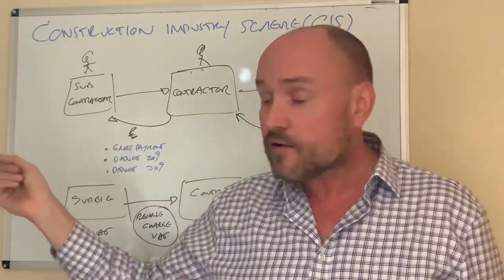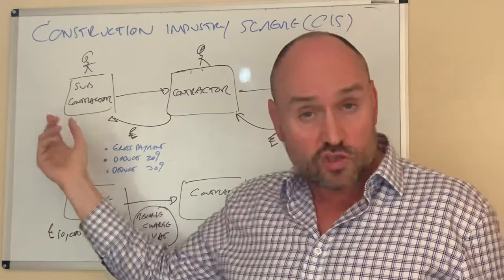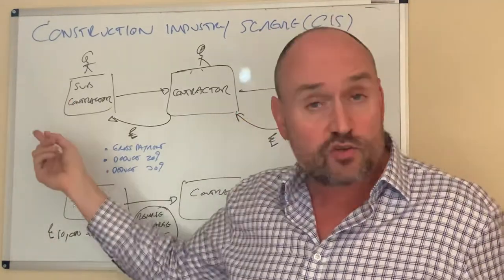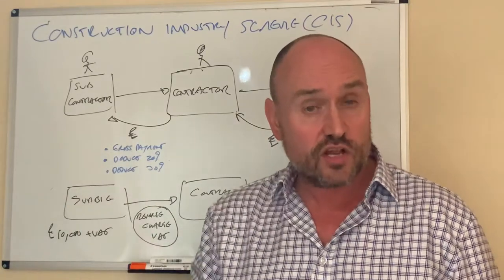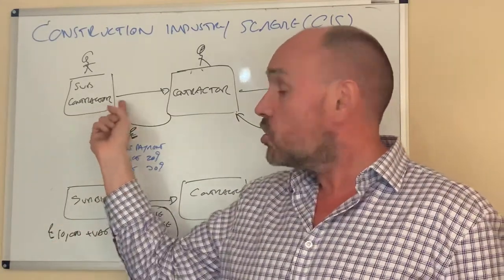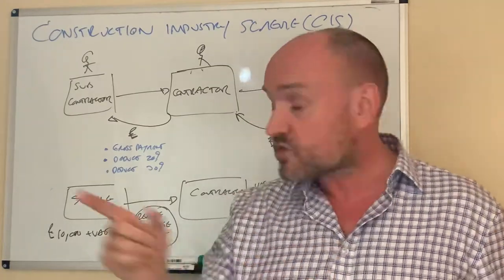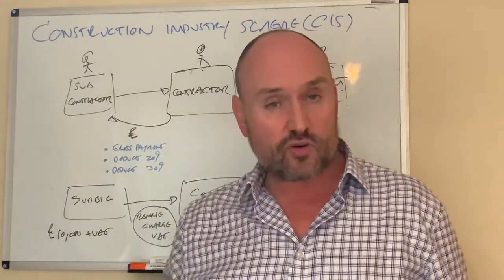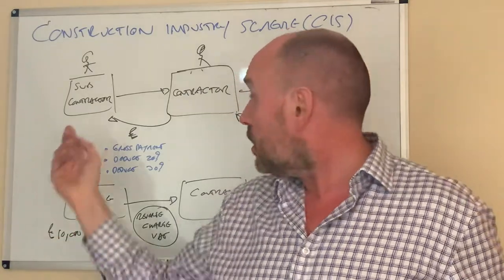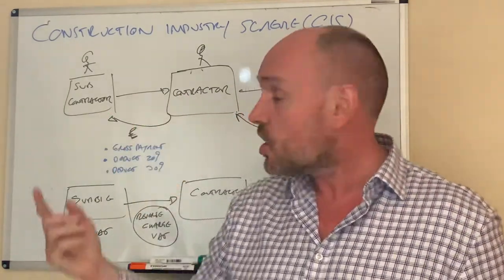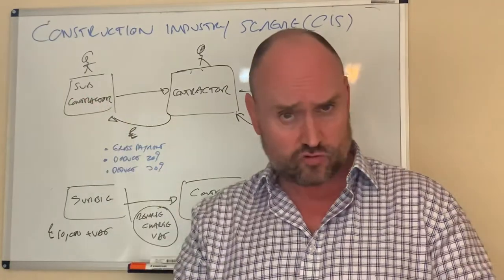At the end of the year, this guy does a tax return, could be a limited company, doesn't matter, individual or limited company, does a tax return, puts in the gross amount of his invoice and then knocks an amount off for the tax that was withheld by the contractor. A little bit like PAYE.